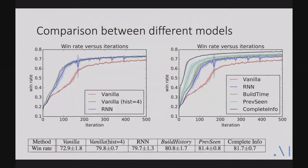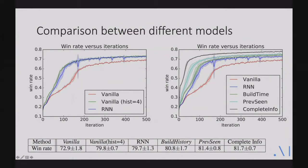Comparing different models, a vanilla model achieves a certain win rate, but there's a gap between vanilla and recurrent neural network models. For games with incomplete information, history matters — the RNN can remember the past and push performance further. We tried different types of histories: build history (remembering all buildings seen during exploration) and a more comprehensive history including all previous units. Performance increases with richer history. The entire game has incomplete information, so agents only observe the portion of the map belonging to them.